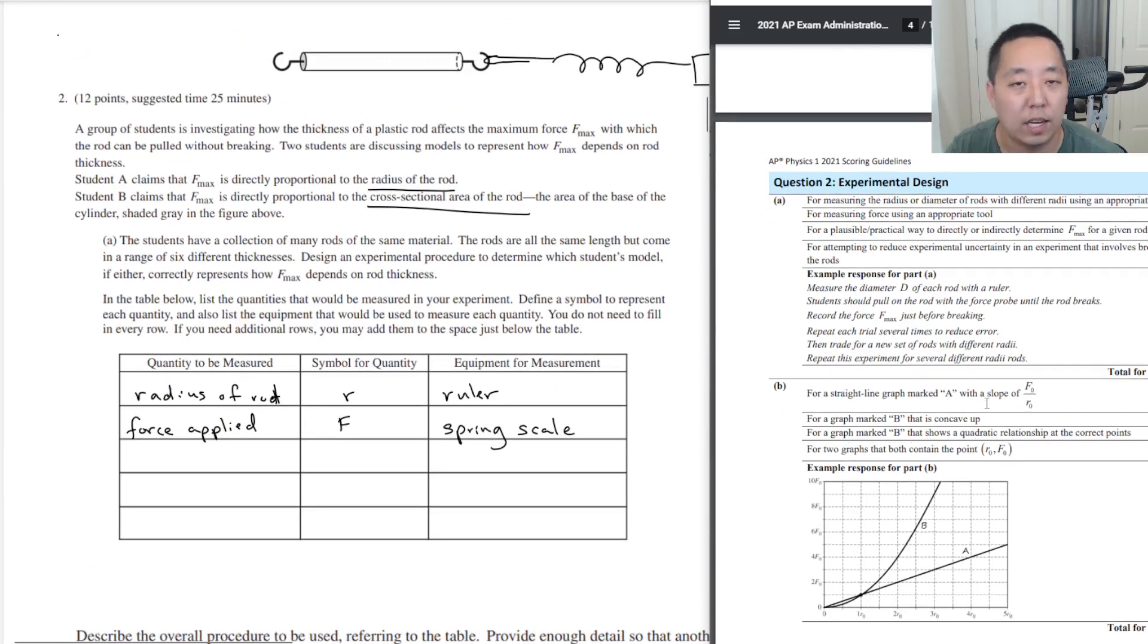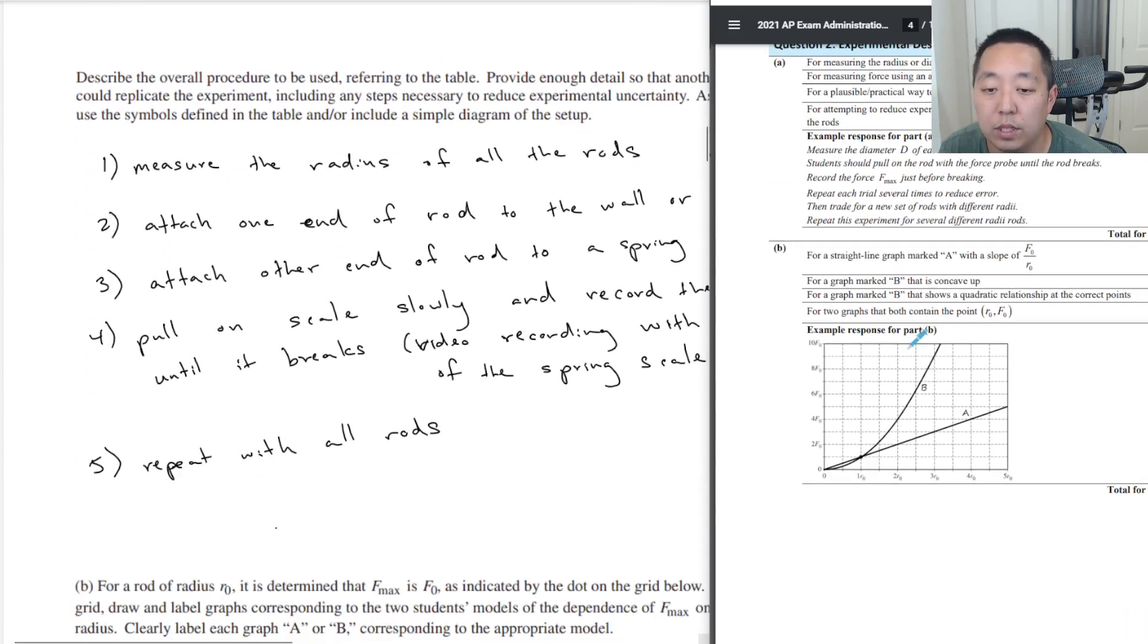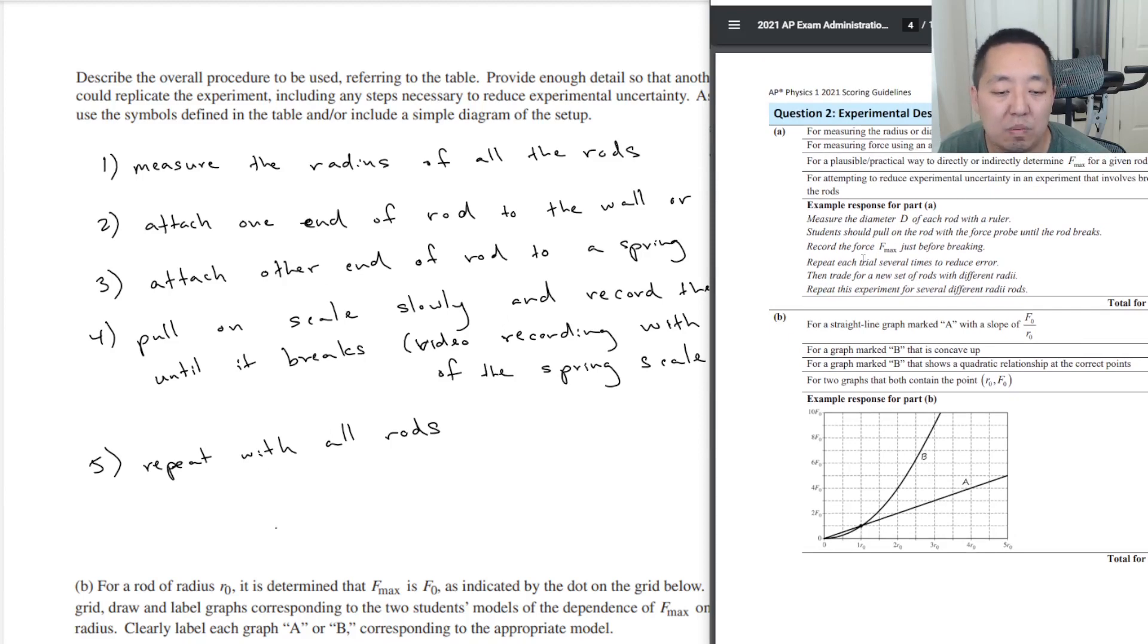This one actually wasn't too hard of a question. I think they even said that a lot of people did well on this question. Here are the breakdown of the points. You got four points here on the first part: for measuring the radius or diameter of rods with different radii using appropriate tool, for measuring force using appropriate tool, for plausible practical way to directly determine F max on a given rod. Plausible, practical - there's a few ways to do it. I kind of did this pulling thing. Some people put weights on it and used gravity. Either way is good. Attempting to reduce experiment uncertainty and experiment involves breaking the rods.